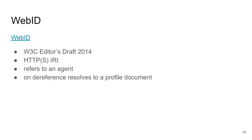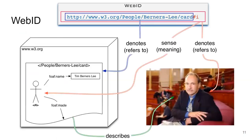WebID is not a W3C standard; it's an editor's draft, kind of a note, but it is the way it is implemented in Solid. It works simply: your WebID is just a URI identifying a person — here the full URI with a fragment — and that full URI identifies a person, in this case Tim.